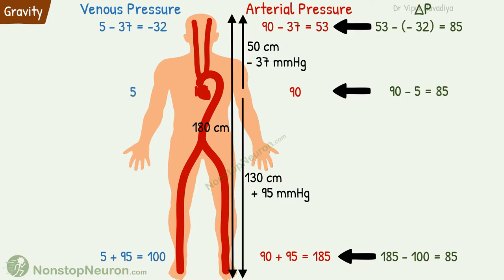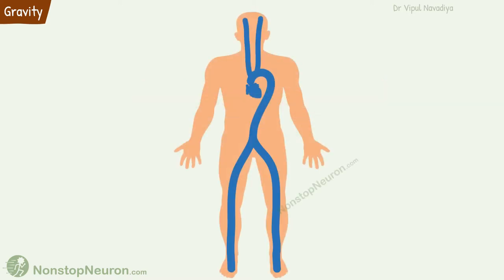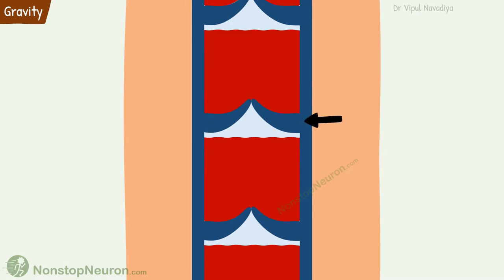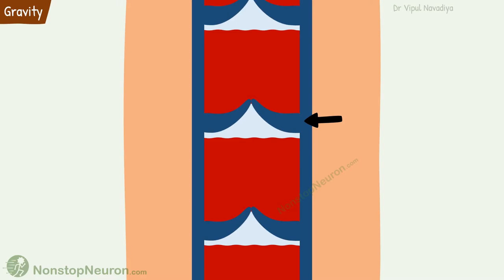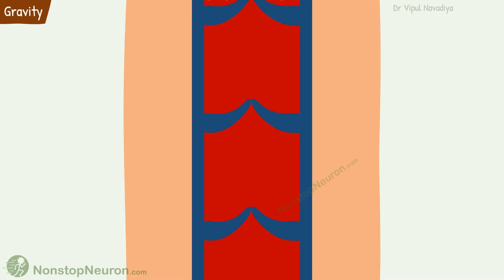Of course, all of this applies to the standing position only. When a person is lying down, the height difference from the heart is negligible, so the entire body is assumed to be at the level of the heart and gravity does not produce much change at different levels. Another exception occurs at the veins of the limbs even in standing position — they have one-way valves that allow blood to flow only upwards. When closed, they prevent blood above the valve from producing pressure on the blood below, effectively breaking the blood column intermittently.